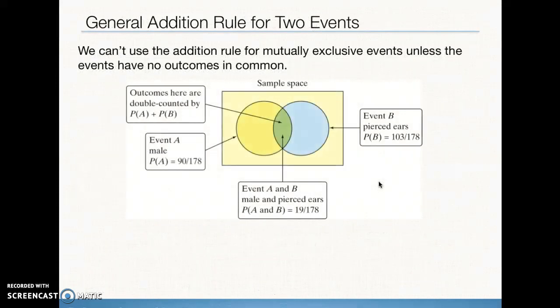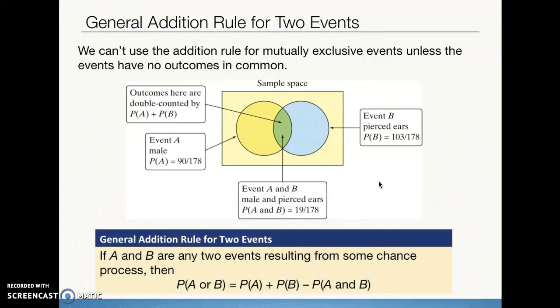When we talk about the general addition rule for two possible events, here's a Venn diagram. We have two different sets — set A, set B — and these overlap; they are not mutually exclusive. There is that green area in the middle where they overlap. In our example, that's where the 19 students who are both male and have pierced ears fit in. So with the general addition rule, we total up the 103 and the 90, then subtract out the 19 before dividing by 178 to get the probability of being male or having pierced ears.